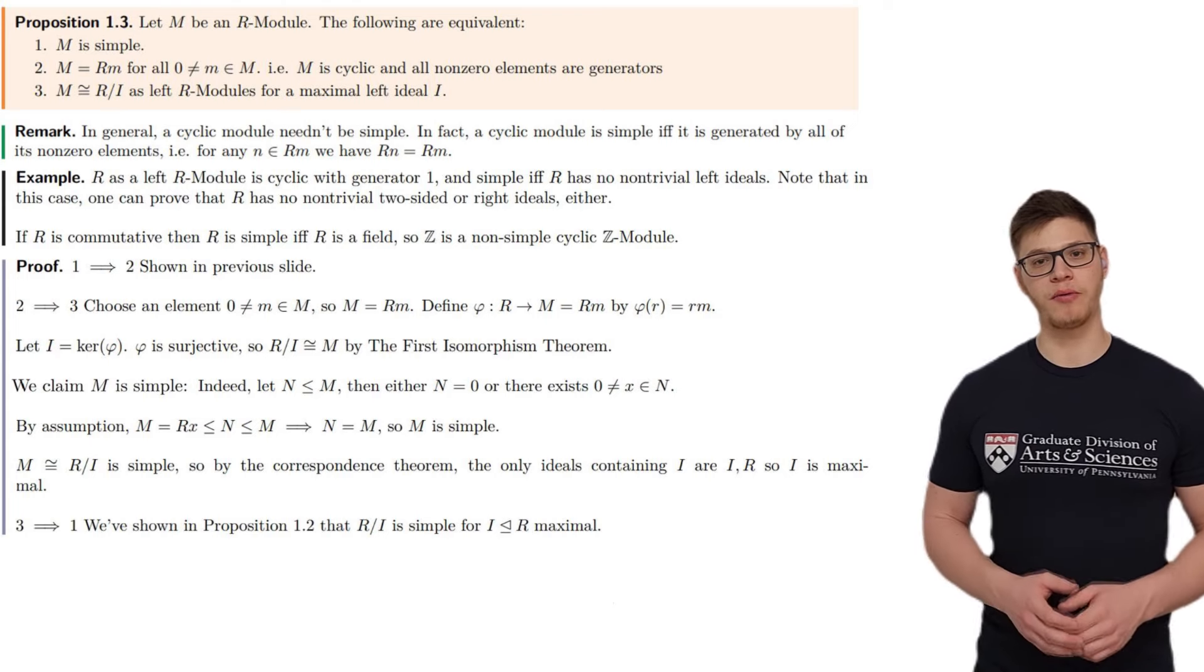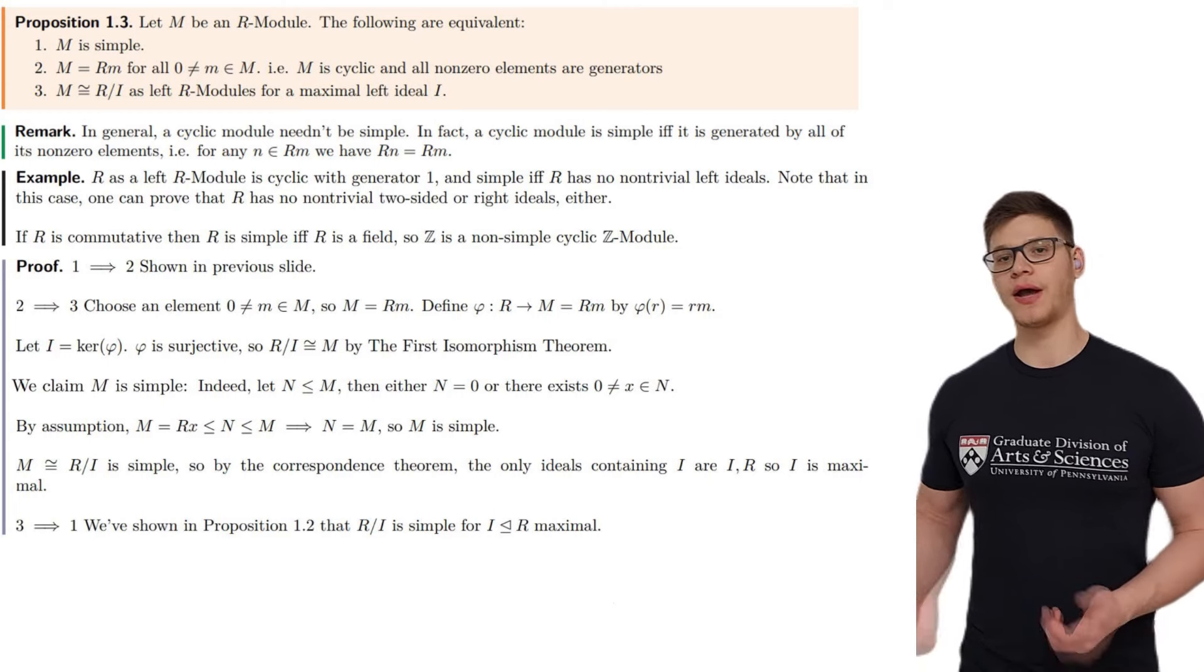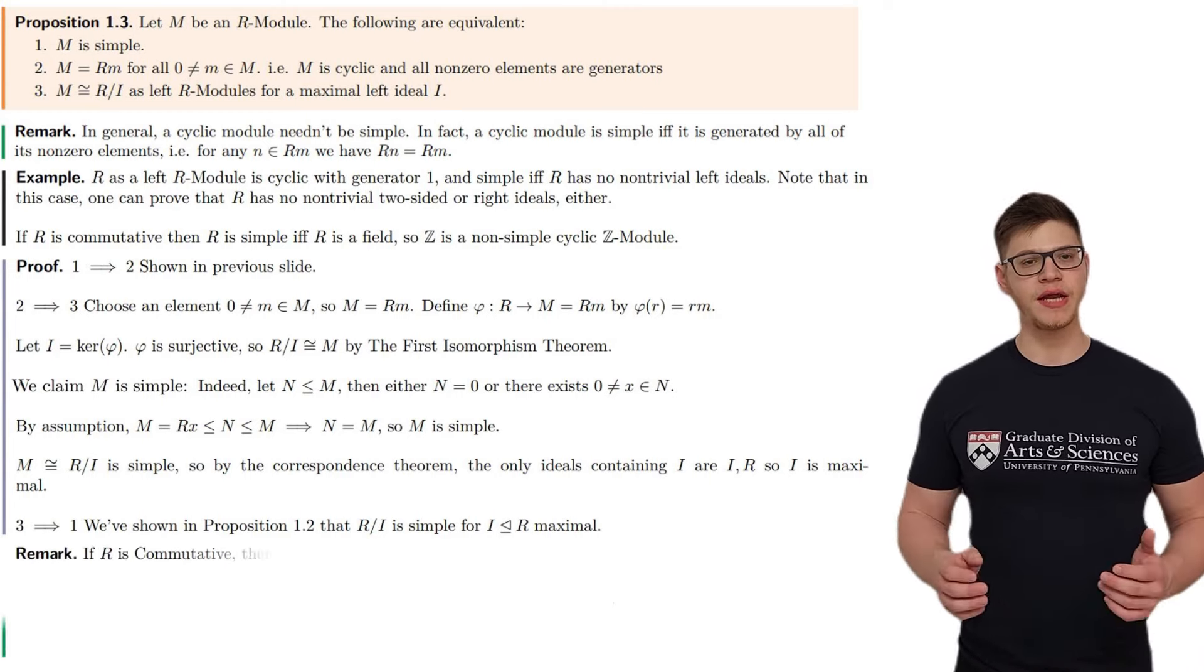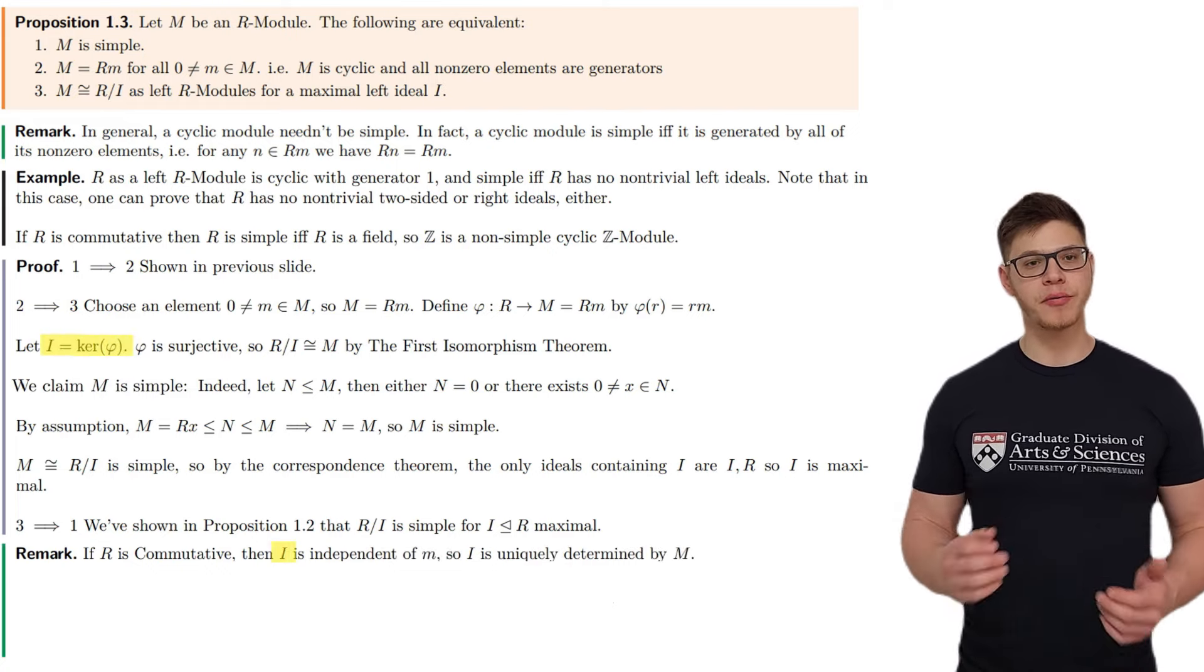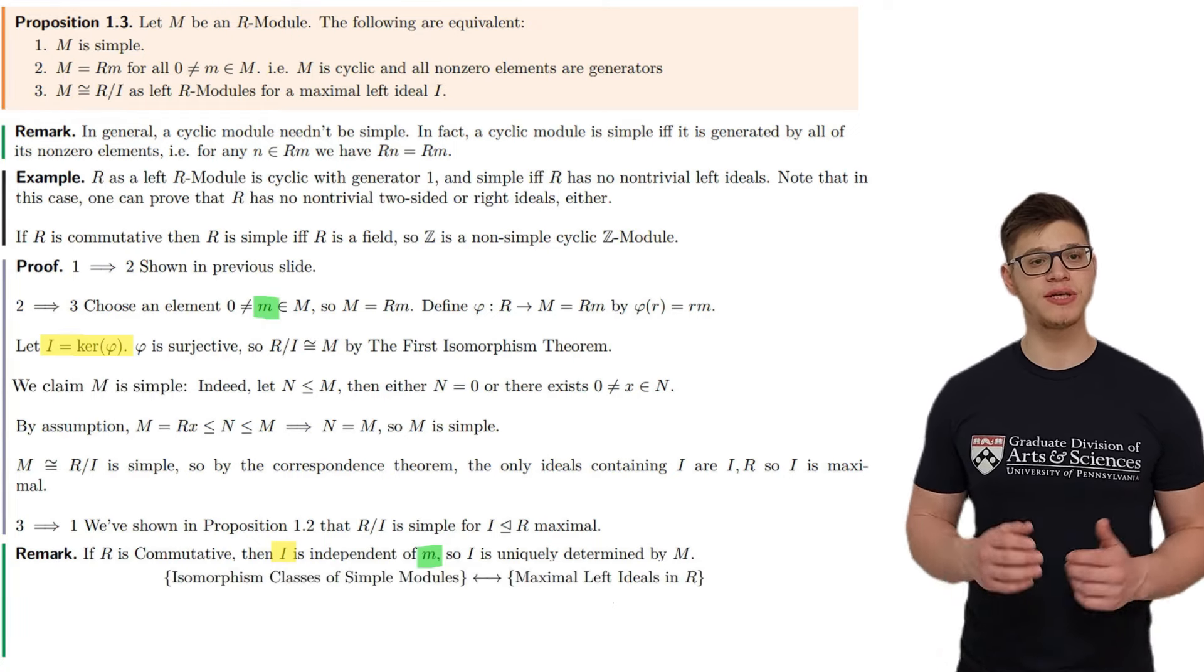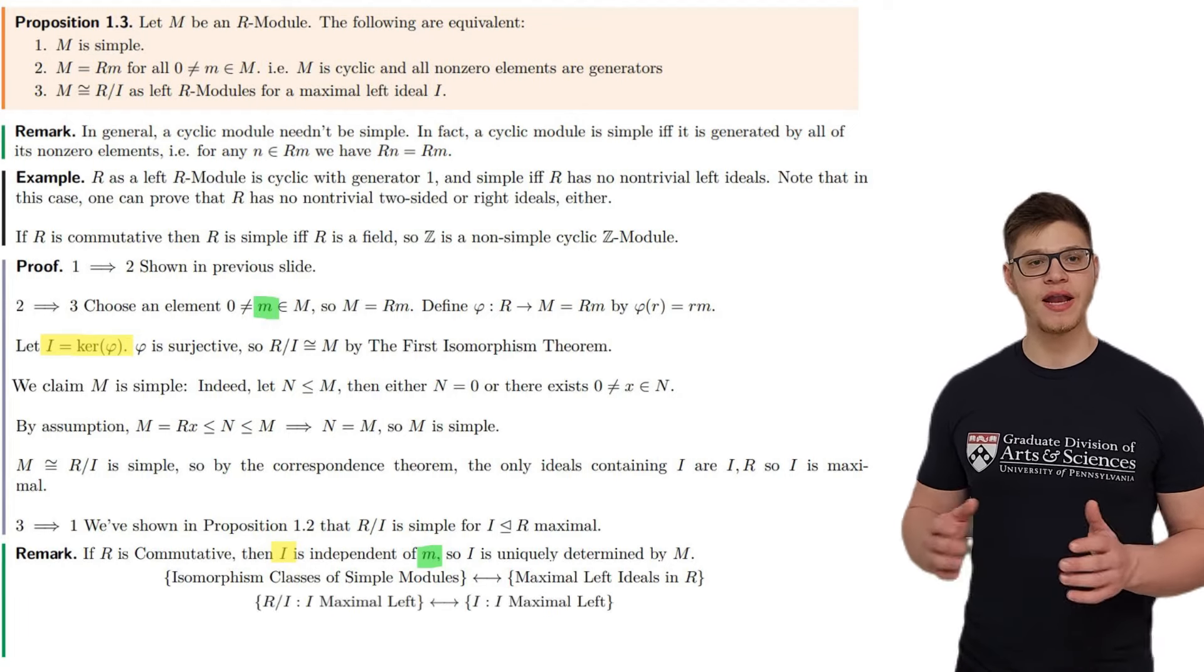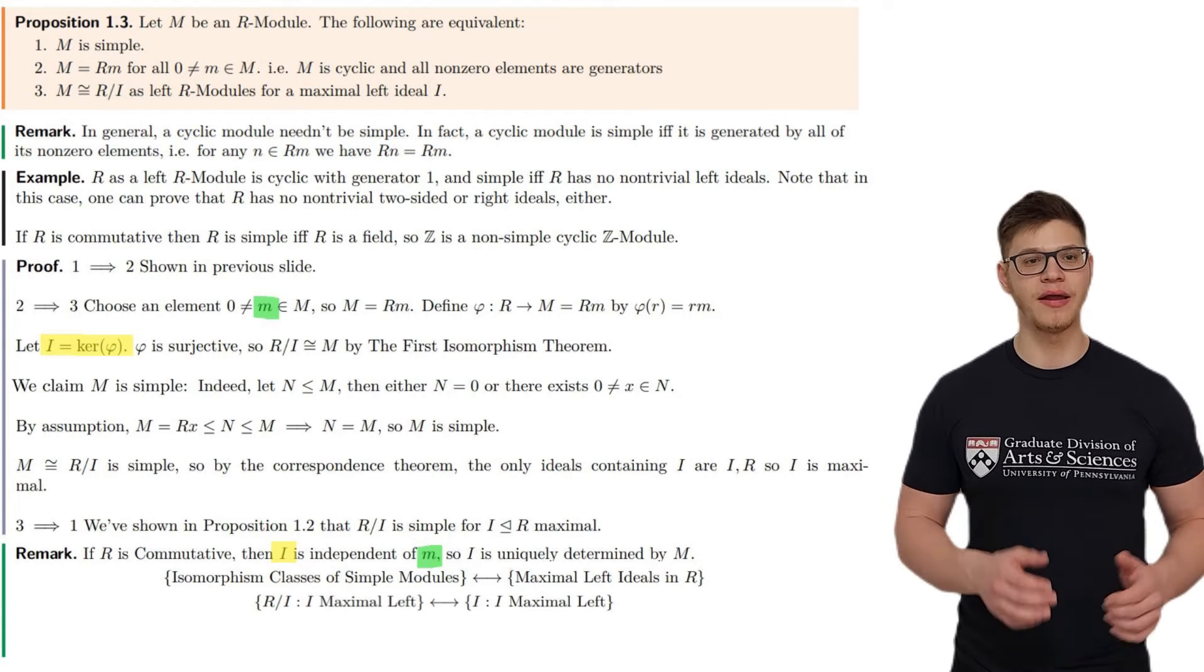Finally, for 3 implies 1, recall that we proved in proposition 1.2 that for a maximal left ideal I, R mod I is a simple module. If R is commutative, it can be shown that the ideal I in the proof is independent of the element m. So I is uniquely determined by the module, or rather, by its isomorphism class. In this case, we get that isomorphism classes of simple modules correspond to maximal left ideals in R, where we can select the representative R mod I in every isomorphism class corresponding to the maximal left ideal I.